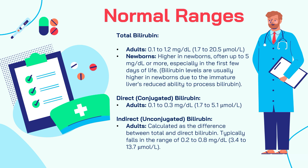The normal range for direct or conjugated bilirubin in healthy adults is 0.1 to 0.3 milligrams per deciliter, or 1.7 to 5.1 micromoles per liter. The normal range for indirect or unconjugated bilirubin is 0.2 to 0.8 milligrams per deciliter, or 3.4 to 13.7 micromoles per liter. The indirect bilirubin value is usually calculated by subtracting the direct bilirubin from the total bilirubin.